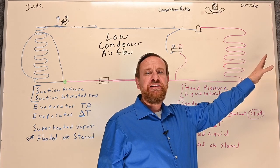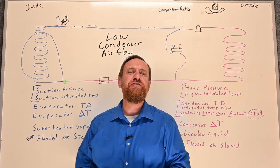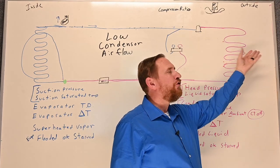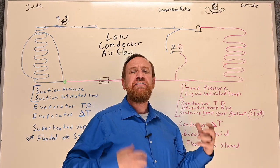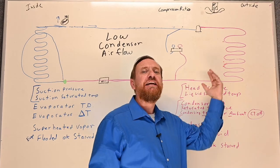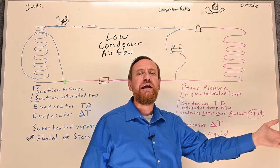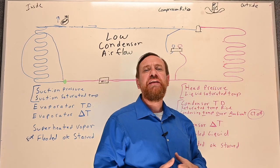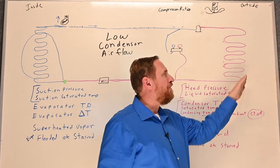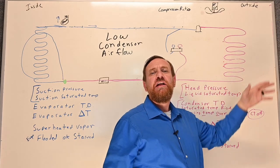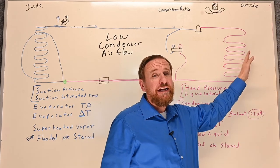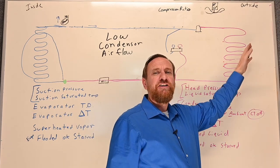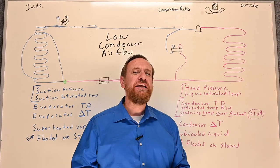If we have blocked airflow in our condenser, it's going to be the opposite of blocked airflow inside. With blocked airflow outside, we have to think that the air is cooling the refrigerant — we're transferring heat from the refrigerant to the cooler air. A dirty condensing coil would do two things: it's blocking airflow, but it's also slowing down heat transfer because that dirt acts like an insulator.